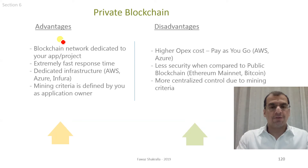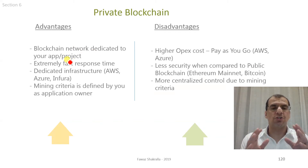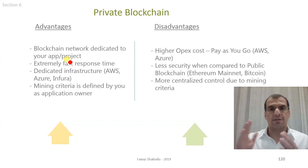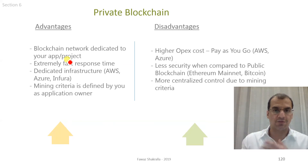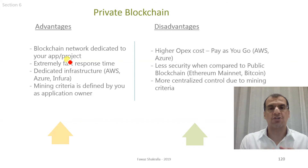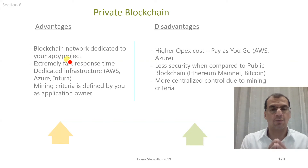In a private blockchain world, the blockchain network is dedicated entirely to your app or project. When you instantiate the blockchain instance, it is completely dedicated for your application — it does not include other applications as in the public Ethereum mainnet. As your application grows in volume, you can still use your existing private blockchain and it should maintain a high TPS rate depending on your configurations.